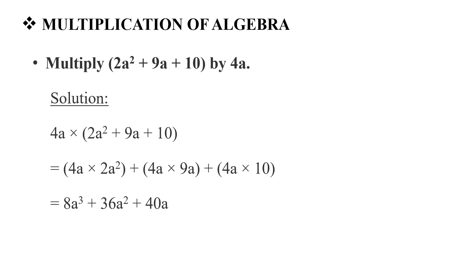Next, we do the multiplication of algebra. First, multiply 2a² + 9a + 10 by 4a. We multiply 4a into the bracket: 4a × 2a² + 4a × 9a + 4a × 10. Using index rules, a¹ × a² = a³, so we get 8a³ + 36a² + 40a.